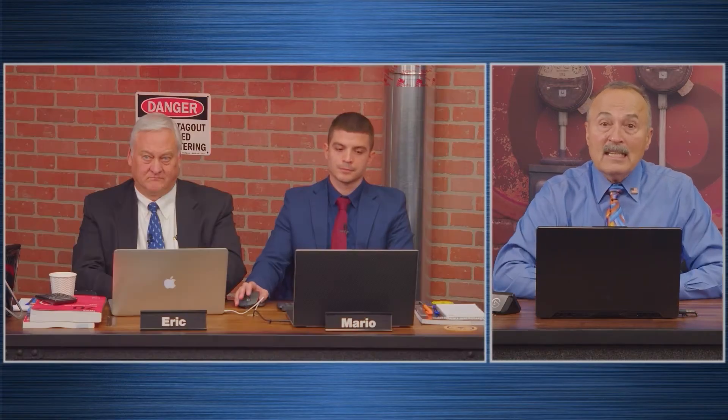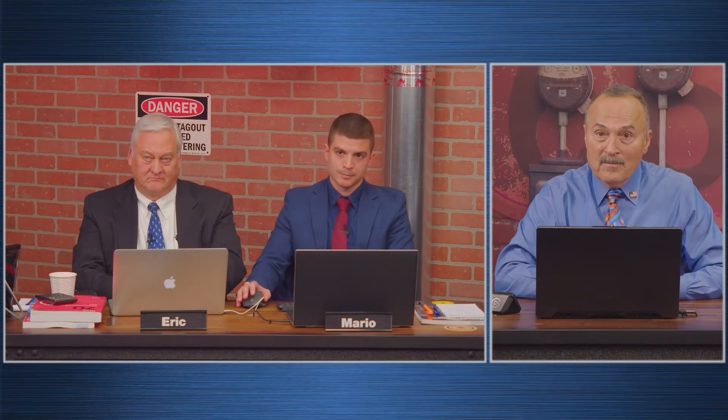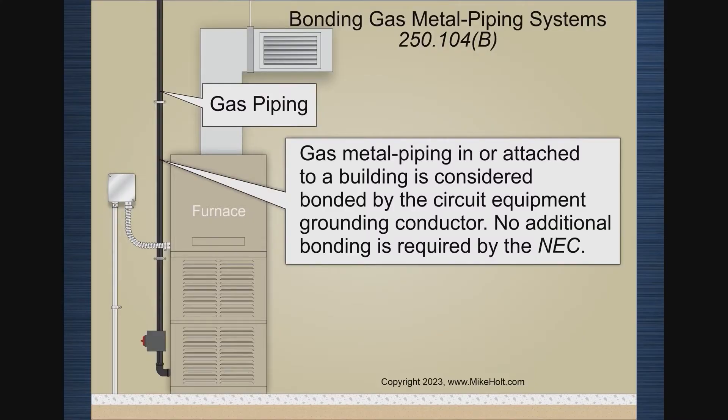Let me phrase it differently: if equipment is being supplied that is likely to become energized and the circuit does not contain an equipment grounding conductor, then it shall be bonded. Looking at a graphic here — metal gas piping in or attached to a building is considered bonded by the circuit equipment grounding conductor. No additional bonding is required by the NEC.